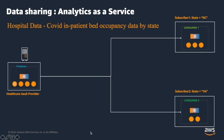For data sharing, the provider stores data in the producer cluster and uses fine-grained access controls at schema, table, or view level to share this data with one or more consumers or subscribers. Subscribers then use their own compute to access this shared data.